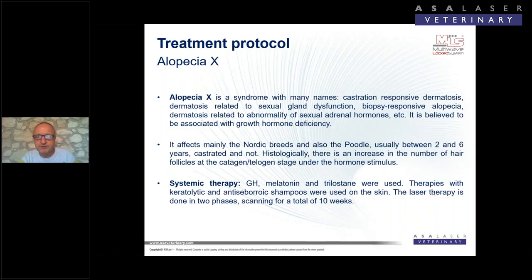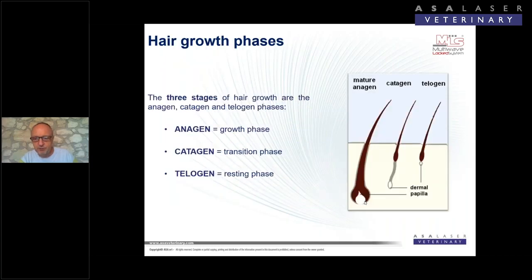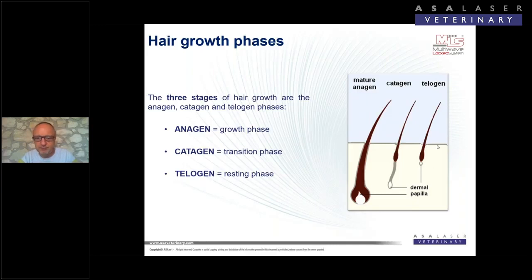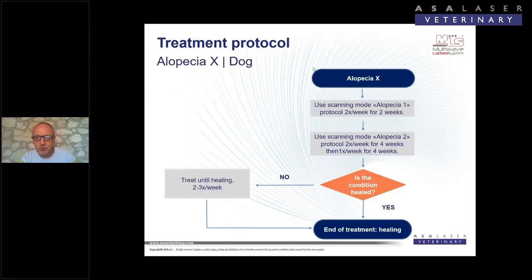Many systemic therapies have been tried: growth hormone, melatonin, trilostane, seborrhoeic and keratolytic shampoos. Laser therapy in two phases is showing very good results. To reach the right diagnosis you need a biopsy, which shows a different and very high number of changes in hair cycle stages and different follicle shapes. We suggest scanning mode: alopecia protocol one, two times per week for two weeks, then alopecia two, two times per week for four weeks, then once per week for four weeks.